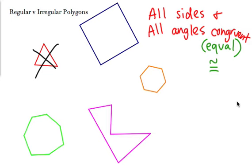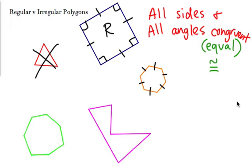The blue quadrilateral — a square — has all sides the same, shown with little tick marks, and all angles are right angles at 90 degrees. So this is a regular quadrilateral, a.k.a. a square. The orange shape has six sides making it a hexagon, and all six sides are the exact same length with all angles the same — so it is regular. Most bigger polygons like hexagons and decagons are usually shown as regular shapes. The pink shape has five sides making it a pentagon, but it is not a regular pentagon — it's irregular.